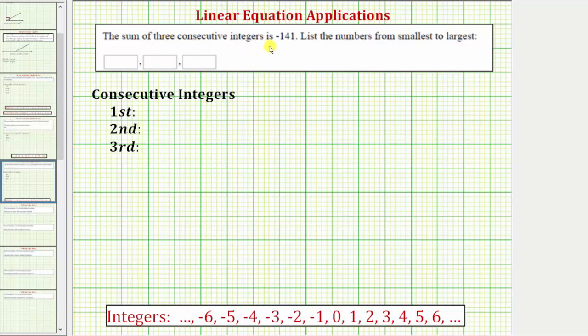The sum of three consecutive integers is negative 141. We're asked to list the numbers from smallest to largest.